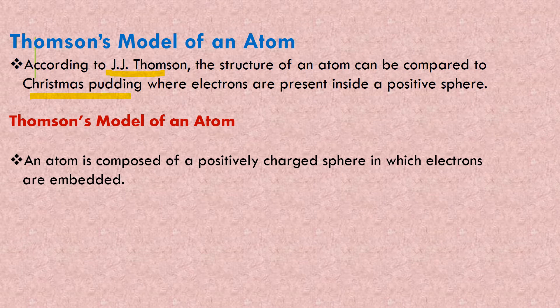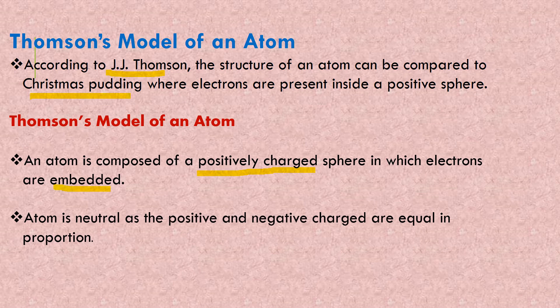Coming to Thomson's model of an atom, what are his postulations? An atom is composed of a positively charged sphere in which electrons are embedded. The sphere is completely positive in which the electrons are embedded. The atom is neutral as the positive and negative charges are equal in proportion. Atoms are always neutral because the positive and negative charges are equal in proportion, so they are canceling each other.